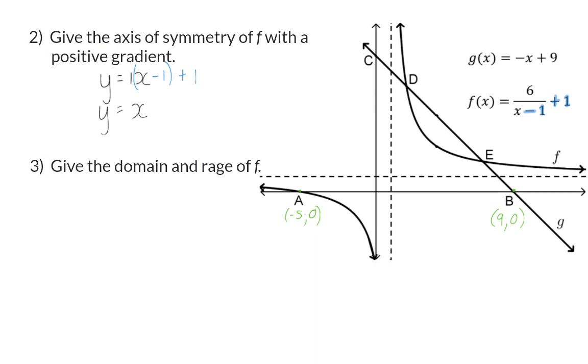you need to remember that a hyperbola has two asymptotes. The vertical asymptote at x is equal to 1 in this case, because we use p with the opposite sign. And a horizontal asymptote at y is equal to 1, which is exactly the q value.